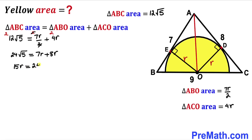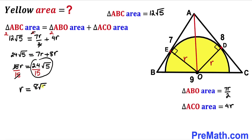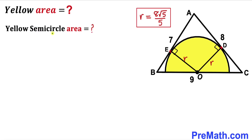Dividing both sides by 15 to isolate r, we get r = 24√5 / 15, which simplifies to r = 8√5 / 5.